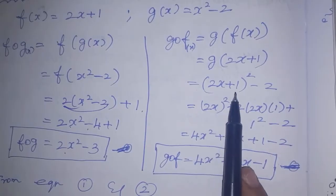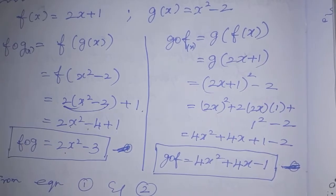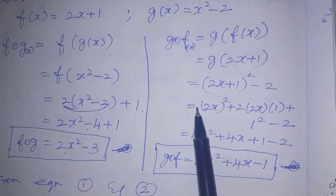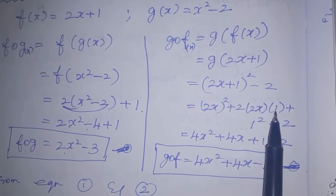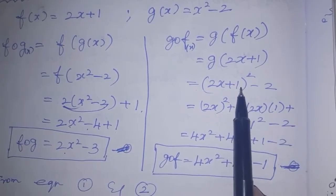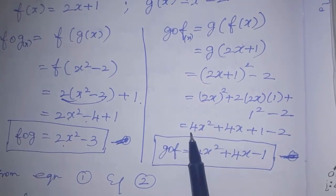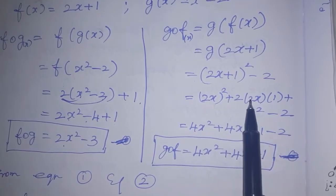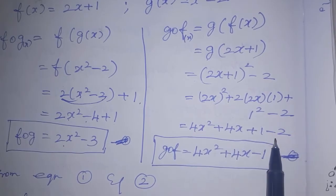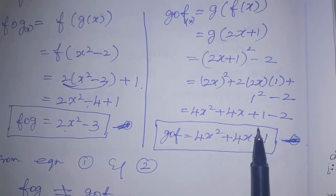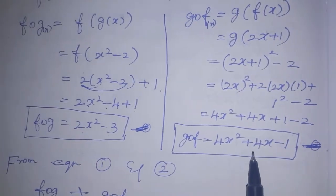Now we have the whole square minus 2. We use the (a+b)² formula to expand: a squared plus 2ab plus b squared. Here a means 2x and b means 1. So 2x whole squared is 4x squared, plus 2 into 2x into 1 is 4x, plus 1 squared is 1, minus 2. So 1 minus 2 is minus 1. Therefore g∘f is equal to 4x squared plus 4x minus 1.